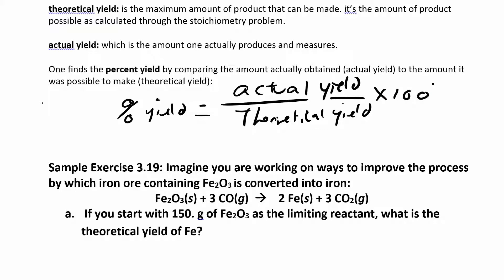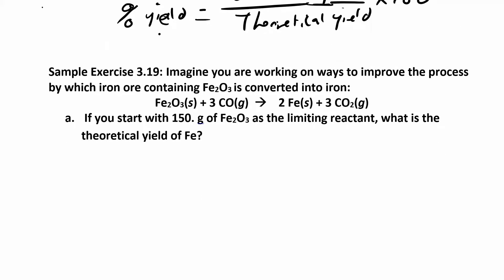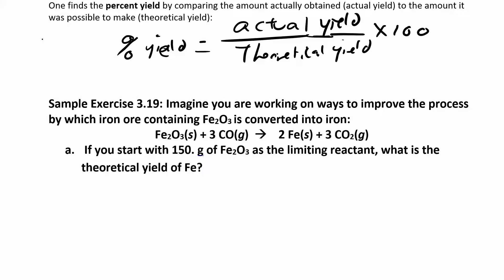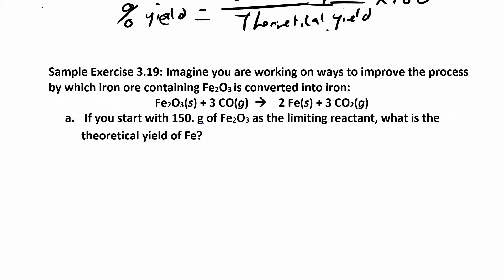That's your percent yield. The actual yield is always going to be smaller than the theoretical yield. You'll calculate your percent yield in organic chemistry when you start making products and weighing them out. You do the reaction, figure out what your theoretical yield was, and then you actually do the reaction to find the actual yield. Actual over theoretical times 100 gives you your percent yield.